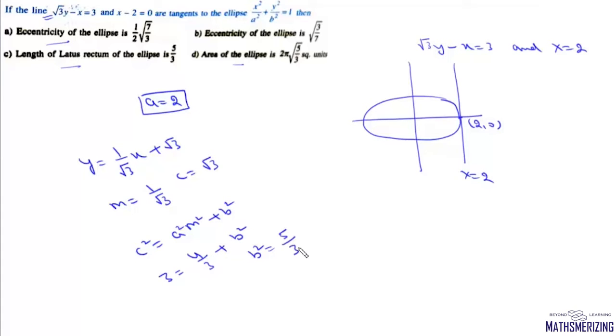So now we have a and we also have b, so we can write the eccentricity of this ellipse. Eccentricity is b² = a²(1 - e²). Now b² in this case is 5/3, a² is 4, and it will be 1 - e².